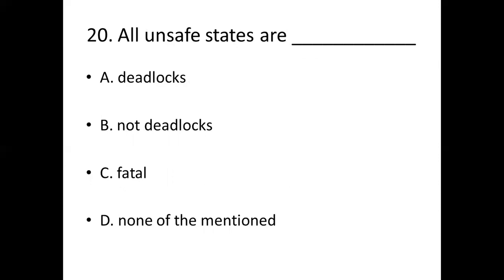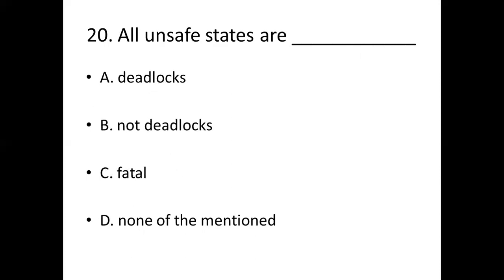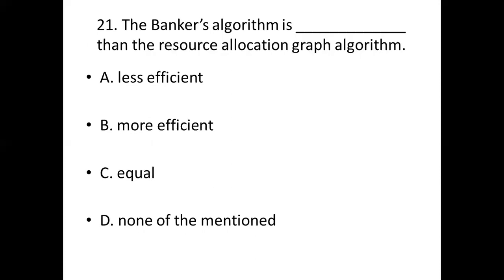Twentieth bit. All unsafe states are dash. Option A: Deadlocks. Option B: Not deadlocks. Option C: Fatal. Option D: None of the mentioned. Answer: Option B, Not deadlocks.